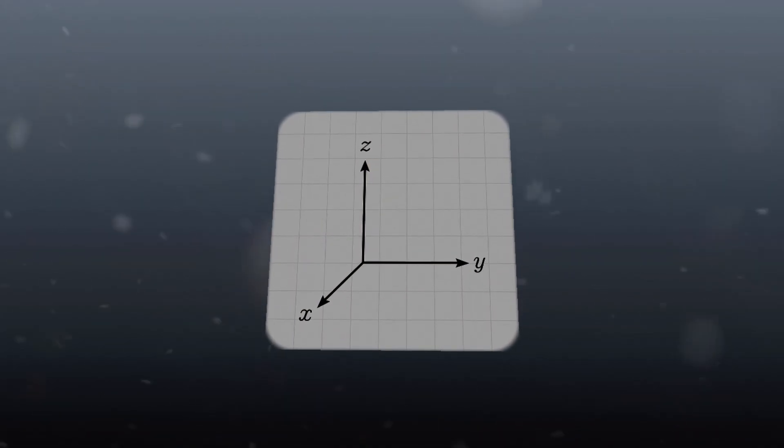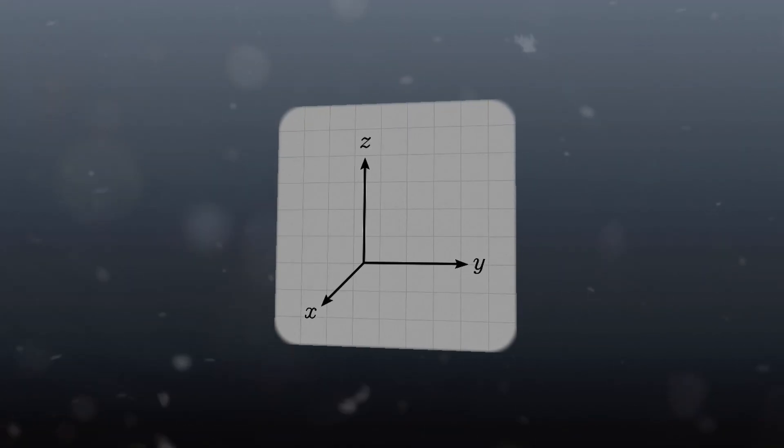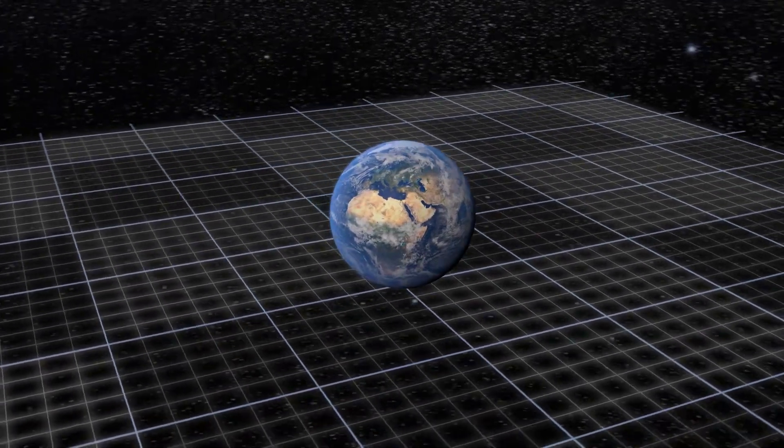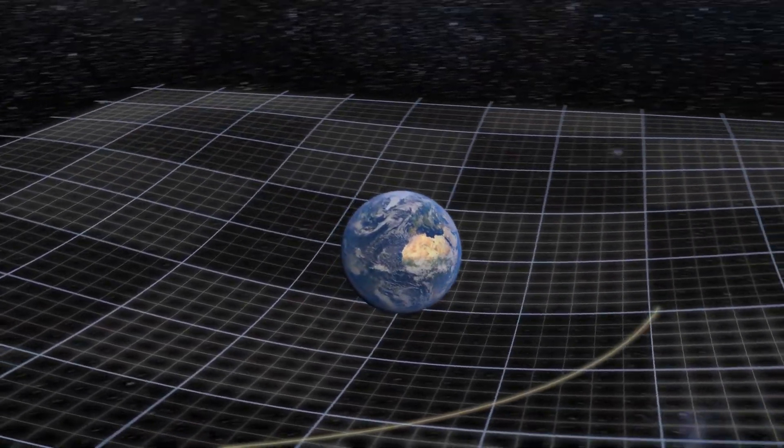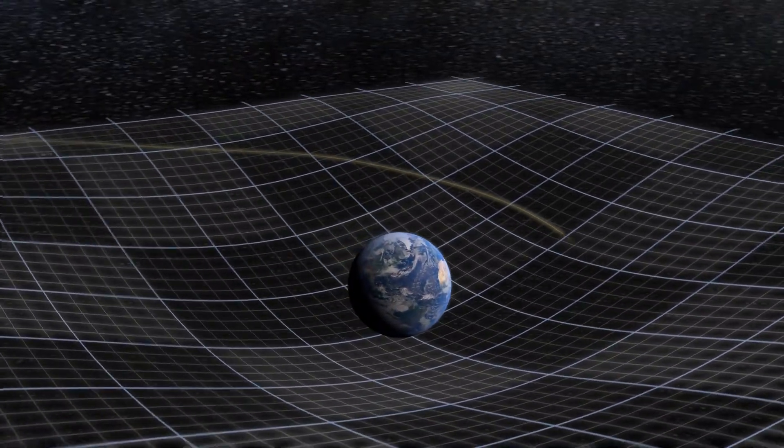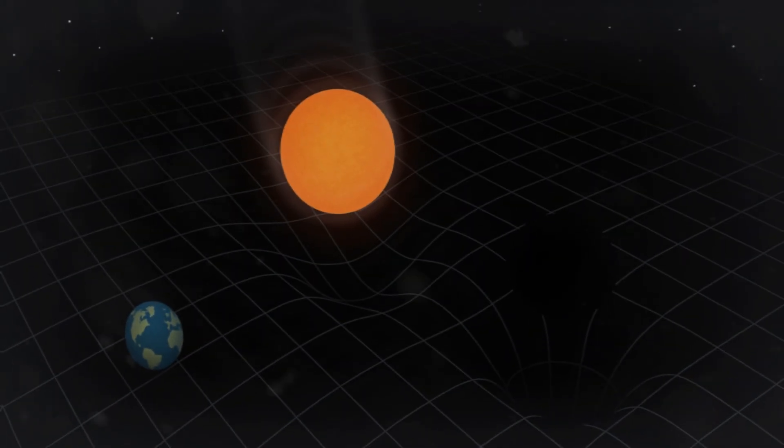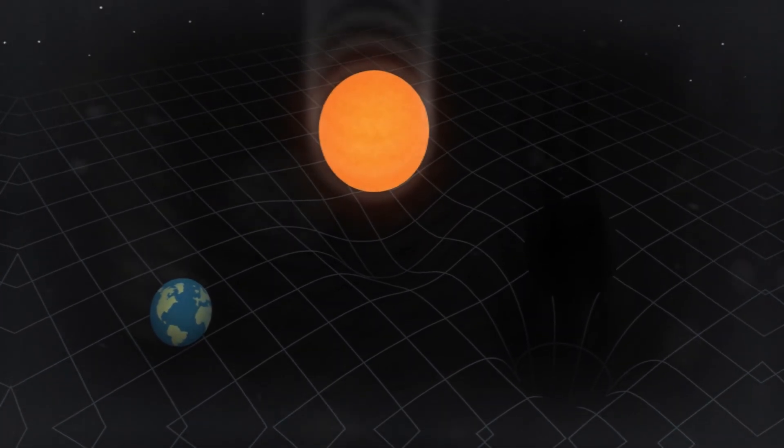In space, there is a dimension called spacetime. Just imagine it as a flat surface where every object in space lays on. Every object with mass will curve this surface. The more mass, the more spacetime will bend. And black holes totally bend it forming these funnels. That means time stops there.